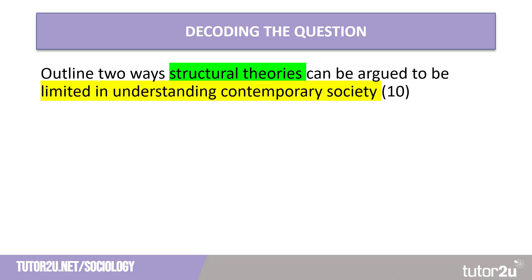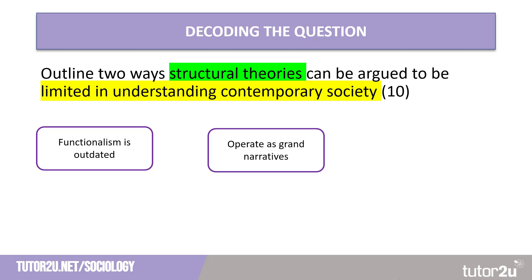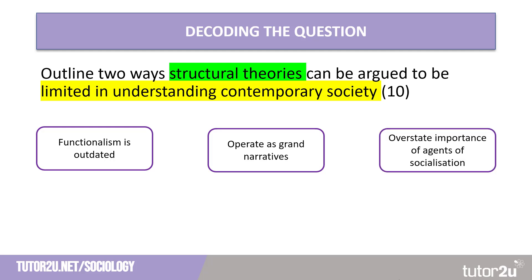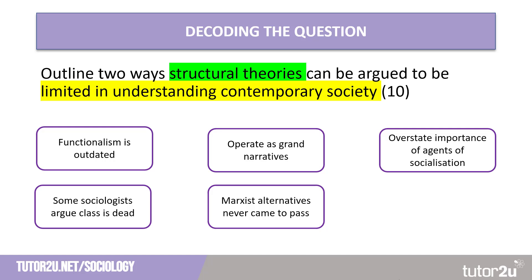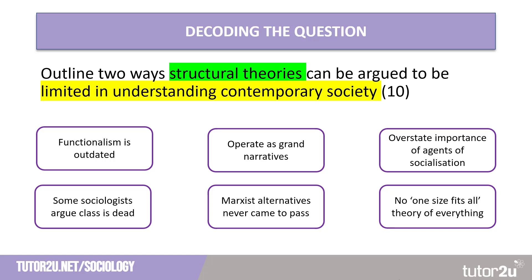Some features of structural theories: functionalism is seen as being outdated; these operate as grand narratives and try to come up with predictions about how human beings will behave; they overstate the importance of agents of socialization such as family, media, and religion. A criticism is that they over-emphasise things like class, gender, and ethnicity. Another criticism is that Marxist alternatives such as revolution and a communist society never came to pass, and there is no one-size-fits-all theory of everything.